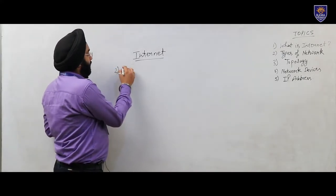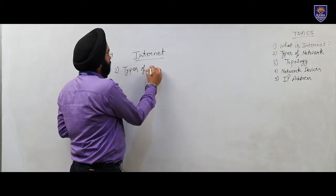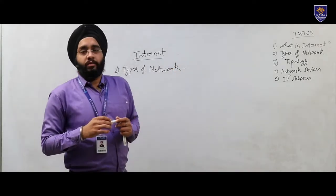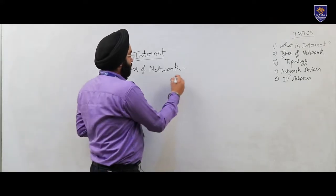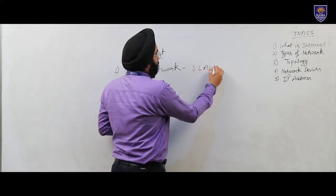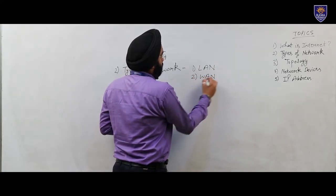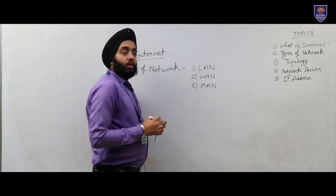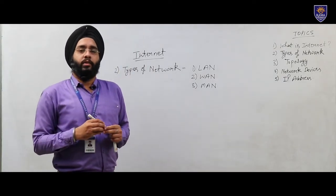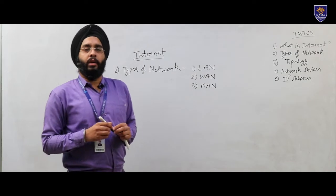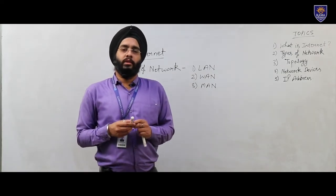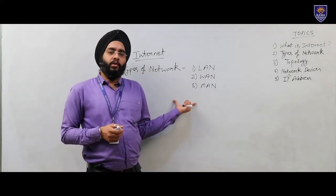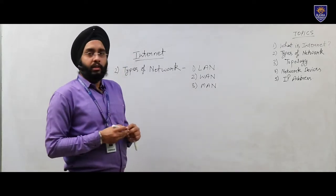The second topic is types of network. There are three types of network in which every computer system is connected: LAN, WAN, and MAN. The first one is Local Area Network — a network which is created in a building, a small room, or a computer lab. In a Local Area Network, limited computer systems are connected to each other in a building or in a room. There is a limited area in which these are connected.